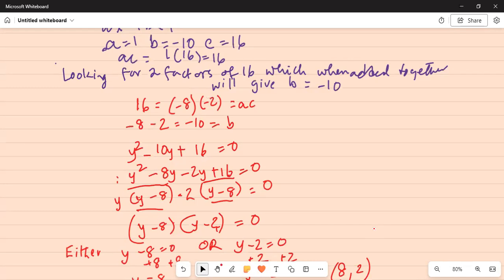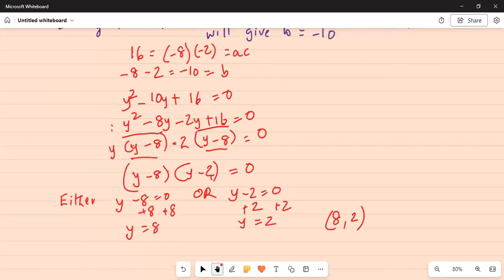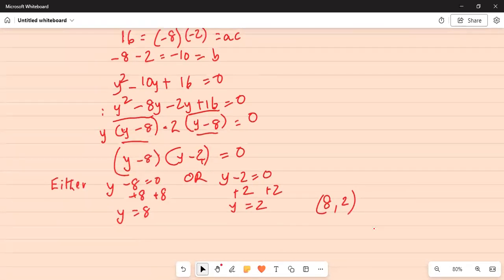Hence the complete factorization is y minus 8 times y minus 2 equal to 0. Since the product of two factors is equal to 0 either the first factor is 0 which gives us y equal to 8 or the second factor is 0 which gives us y equal to 2. So there are two solutions 8 and 2. I'll stop here today.